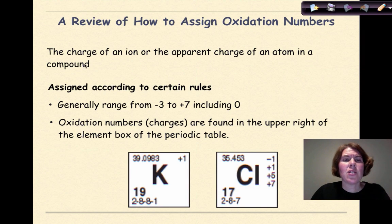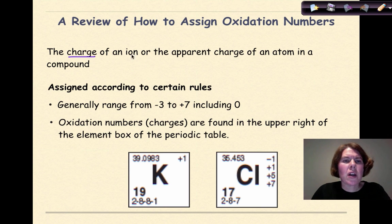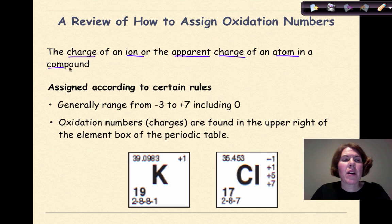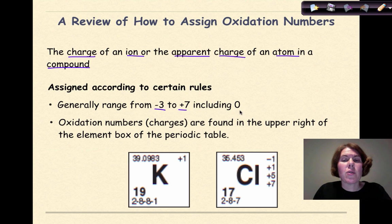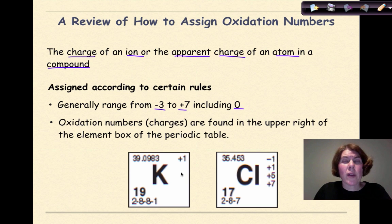A review of how to assign oxidation numbers. An oxidation number is the charge of an ion or the apparent charge of an atom in a compound. Oxidation numbers are assigned according to certain rules. They generally range from negative 3 to plus 7, including 0, and they can be found on your region's reference table in the upper right-hand corner.